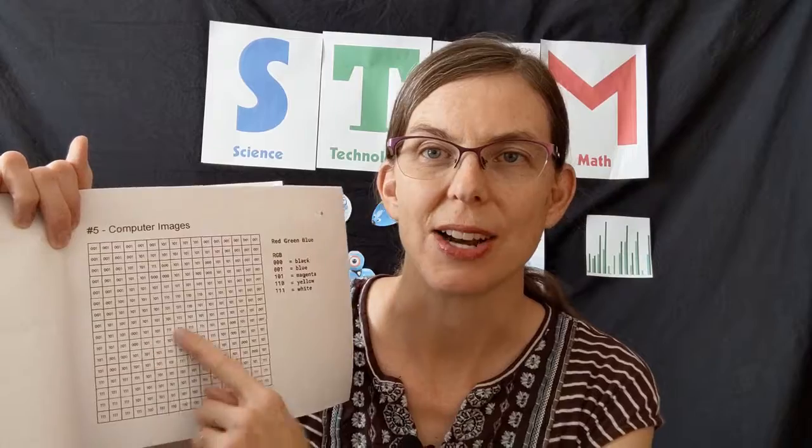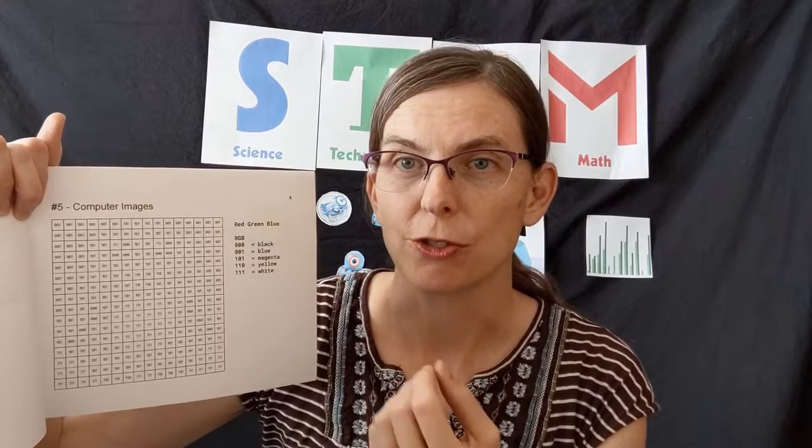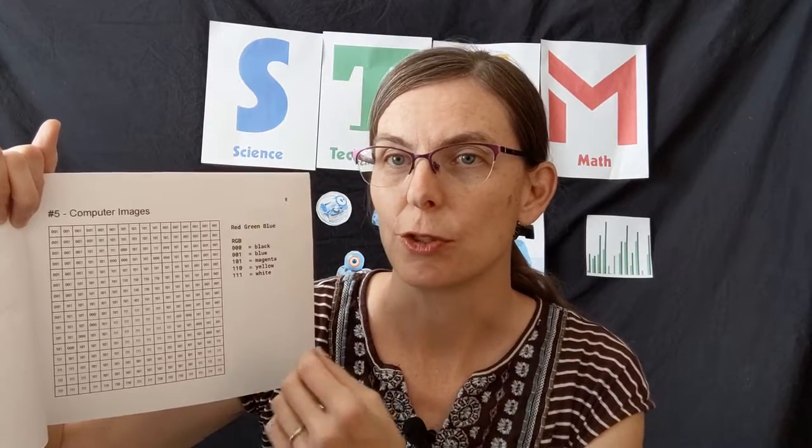In your STEM packet, turn to page six where it says 'computer images.' You'll see a grid here. I made a secret picture for you that you can decode by using these numbers. Each square has some zeros and ones in it — there are three of them. The first one is for red: if there's no red it'll be a zero, if there is red it'll be a one. The next one is for green and the last one is for blue.